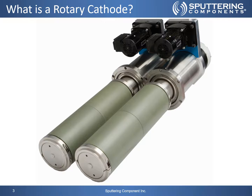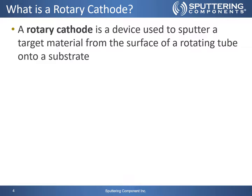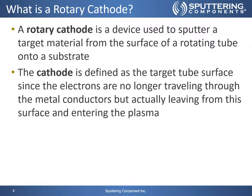These are rotary cathodes along with the device that was shown on the previous page. So what are they? What do they do? A rotary cathode is a device used to sputter a target material from the surface of a rotating tube onto a substrate. The cathode is defined as the target tube surface since the electrons are no longer traveling through the metal conductors but actually leaving from the surface and entering the plasma.